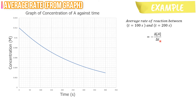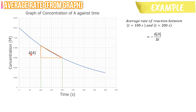The second step: draw two vertical lines that touch the curve at T equals to 100 seconds and T equals to 200 seconds. The third step: connect these two lines by drawing a straight line in between them. The fourth step: make a triangle out of this line. The difference in concentration of A is labeled delta A, whereas the difference in time is labeled as delta T.